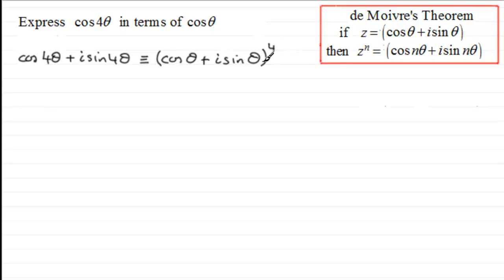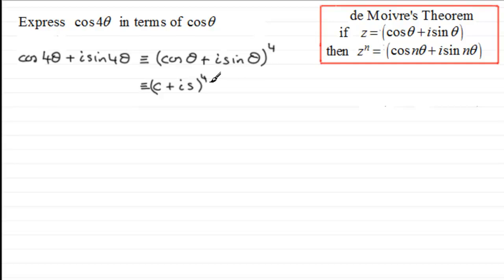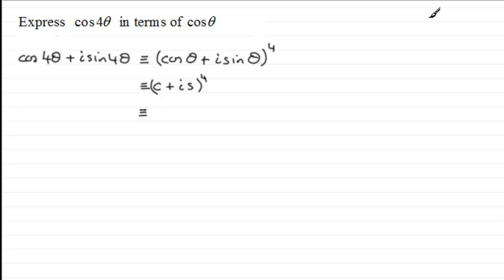We're going to expand this, but because it's quite lengthy I'm going to rewrite it as simply (c + is)^4, abbreviating cosθ as c and sinθ as s. To expand this bracket — which sometimes has quite a large power — we can use the binomial expansion. I'll use Pascal's triangle for this one, though you could also use the combinations method.